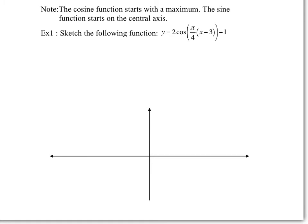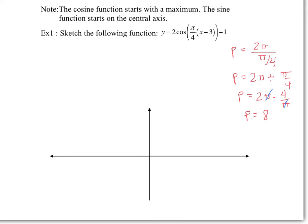Now, sketch the following function. The first thing I always do is calculate the period, just to figure out how I should be labeling the graph. The period is equal to 2pi divided by the value of b, and the value of b is pi over 4. So 2pi divided by pi over 4 equals 2pi times 4 over pi, and the period is 8. Since the period is in units, not pi, I'm going to make sure my x-axis is in units.